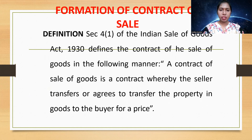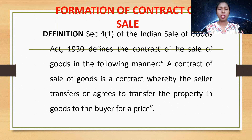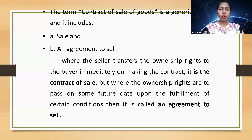Section 4, sub-section 1 of the Indian Sale of Goods Act 1930 defines the contract of sale of goods in the following manner: a contract of sale of goods is a contract whereby the seller transfers or agrees to transfer the property in goods to the buyer for a price. Under the Sale of Goods Act, one person sells goods and the other person buys them by paying money. The term 'contract of sale' in generic terms also includes sales and agreement to sales.